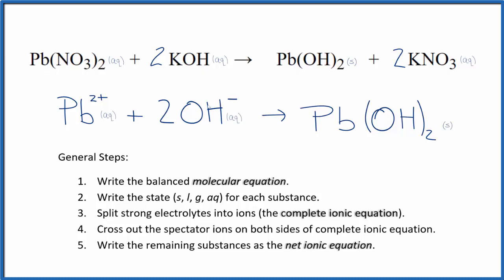So we have these two aqueous substances here. They come together and form a solid. This is going to be the precipitate that will fall to the bottom of the test tube.